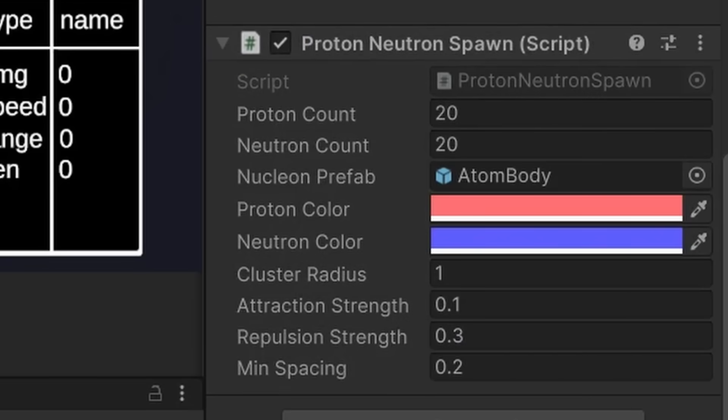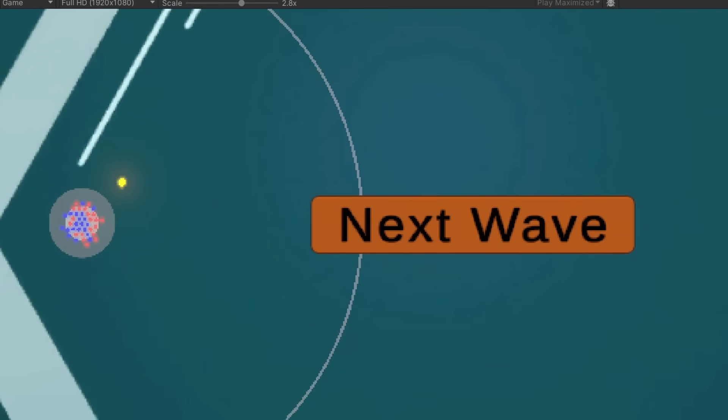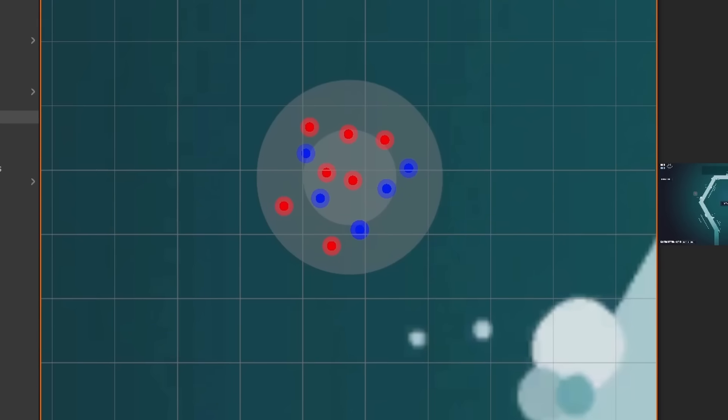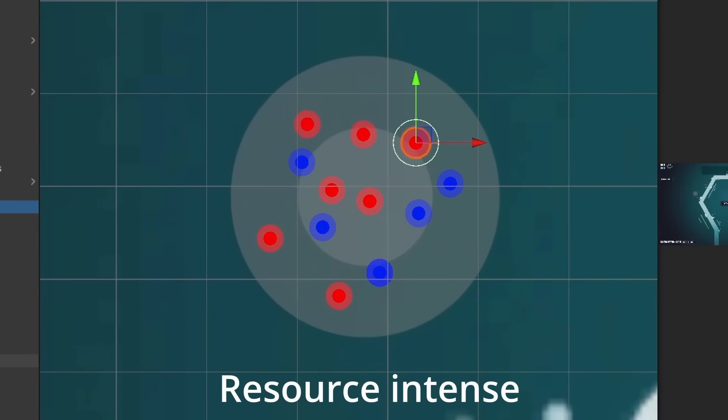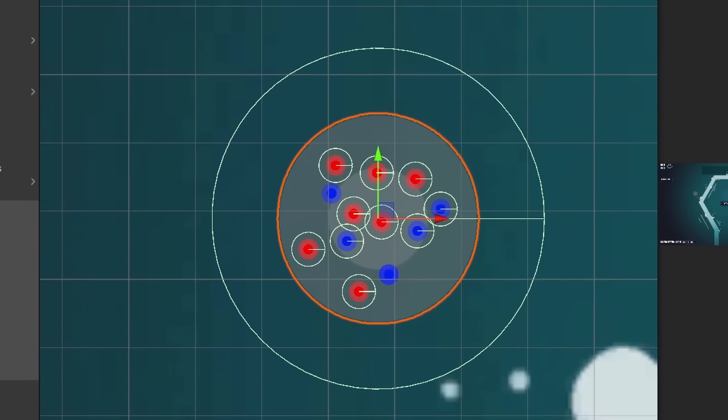The first thing I did was this script that takes a number of proton and neutron inputs and spawns these little circles for each one. I'm not totally sold on this method because there's a lot of empty space for smaller atoms, and these circles are using physics to prevent them from overlapping, which doesn't seem optimal.